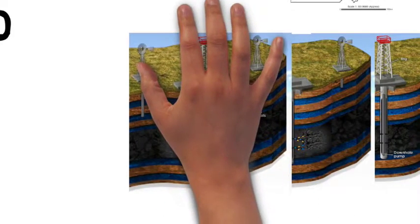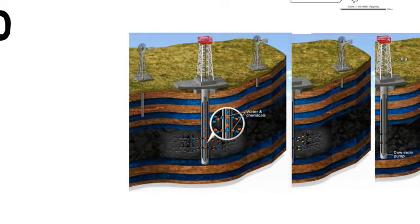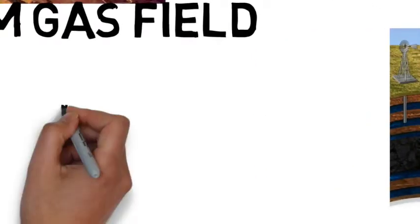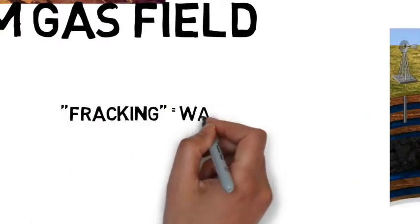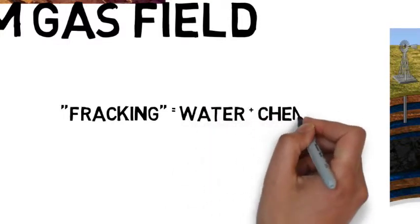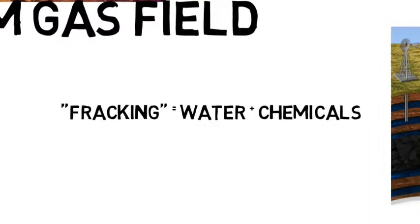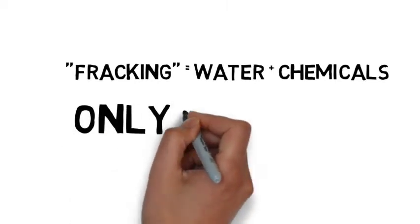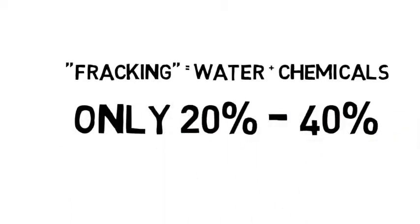Sometimes the wells intersect with permeable coal seams, and to release the flow of gas, hydraulic fracturing or fracking needs to occur. Fracking involves injecting fluid made up of water and chemical additives to create fractures into the coal seam to increase coal seam gas production. Fracking is widely used, but only practiced in approximately 20 to 40% of coal seam gas wells.